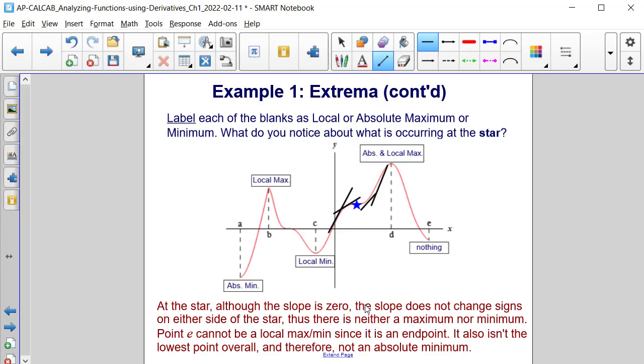Therefore, there is neither a maximum nor a minimum at this value. And just reiterating, point e cannot be a local maximum or minimum since it's an endpoint. And it's also not the lowest point overall. Therefore, it's not an absolute minimum. And that's why it's labeled as nothing.